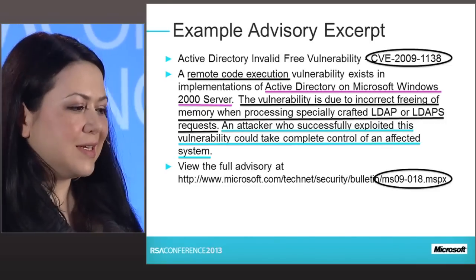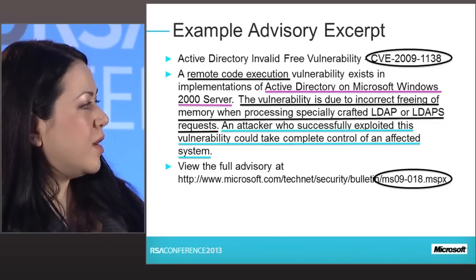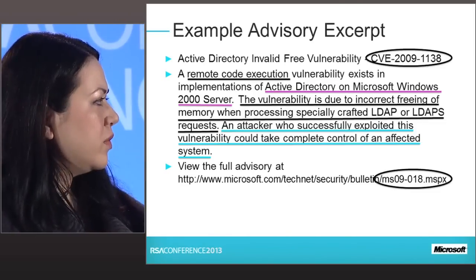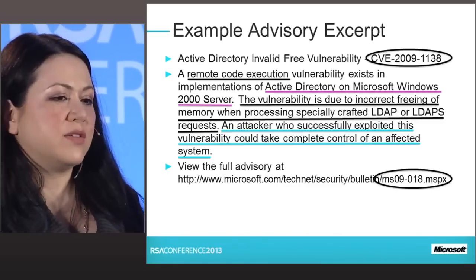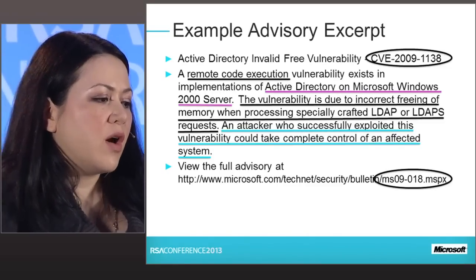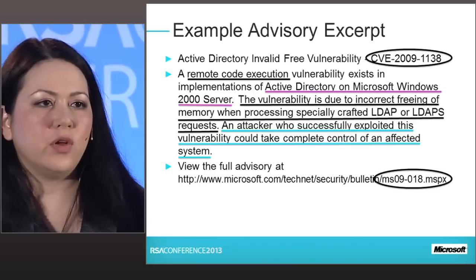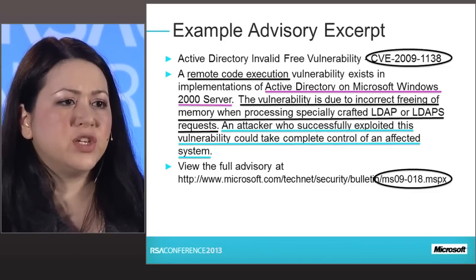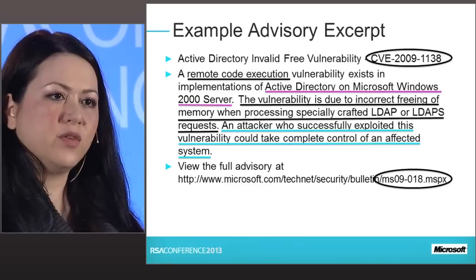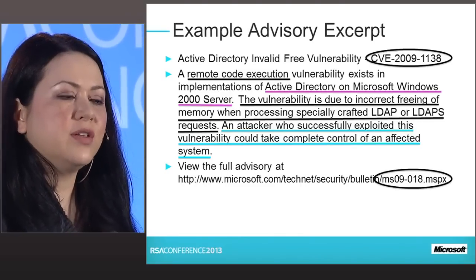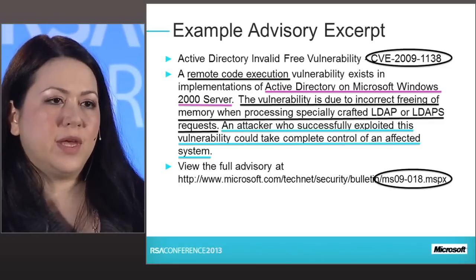The meat of the advisory should contain enough information for a user to determine their risk level — which programs, platforms, or online services are affected, such as 'Active Directory on Microsoft Windows 2000 Server.' It should also let users know what an attacker could do if successful — for example, 'an attacker who successfully exploits this vulnerability could take complete control.' The last thing to include is where the user can actually download the fix or read documentation to make the appropriate changes.